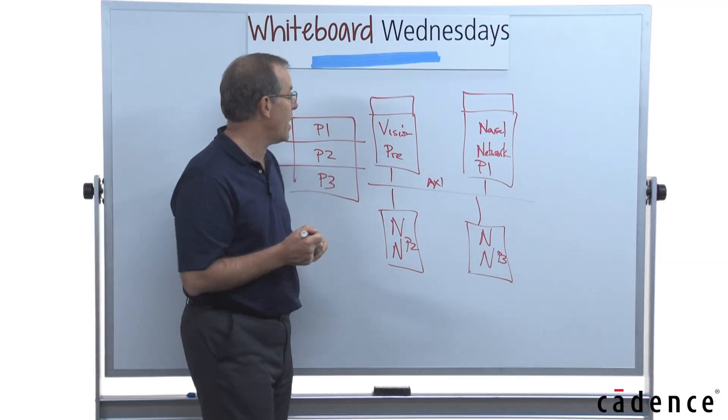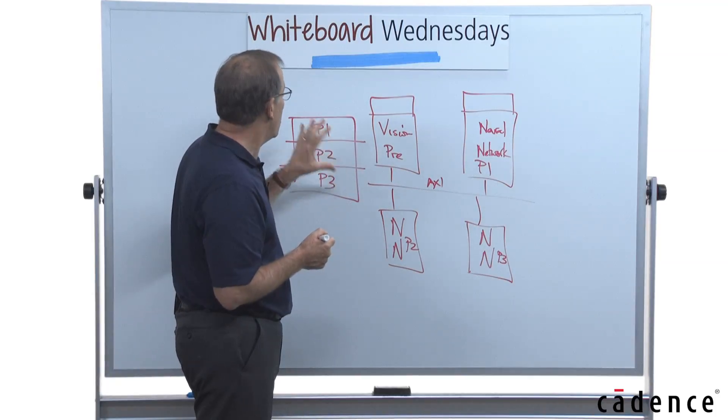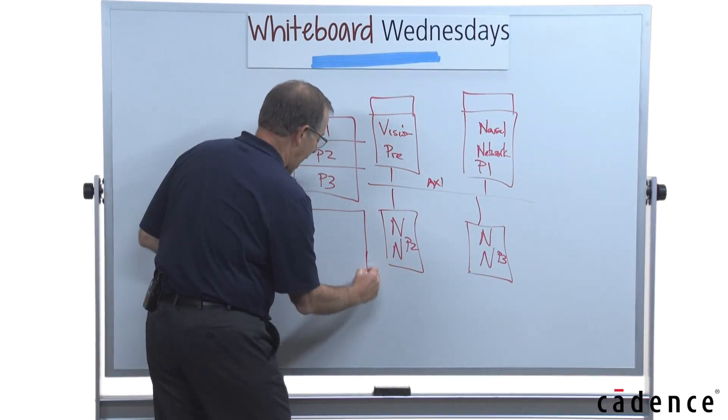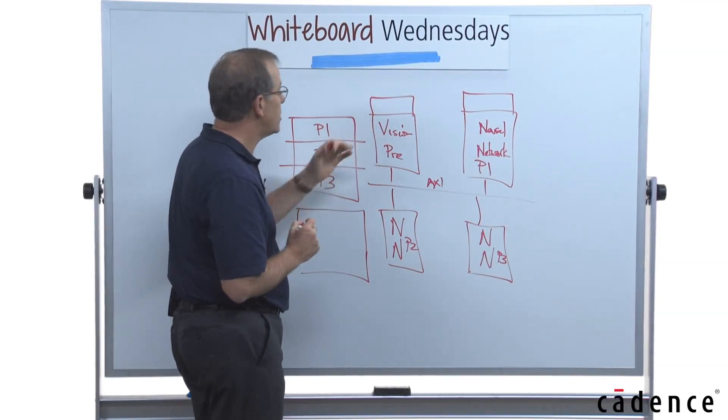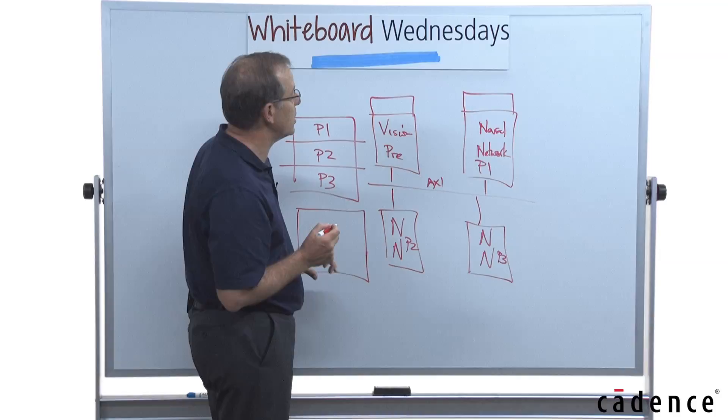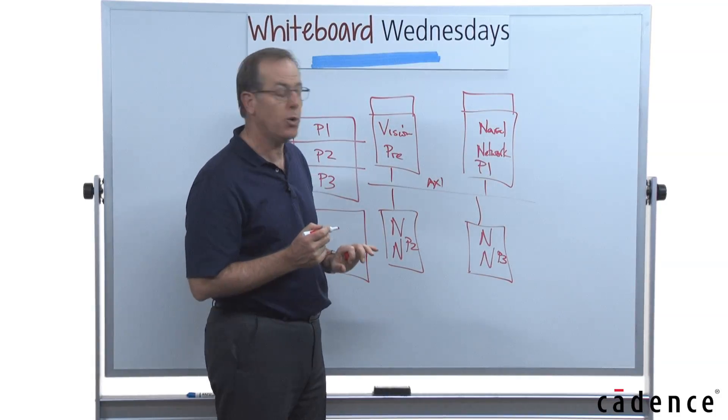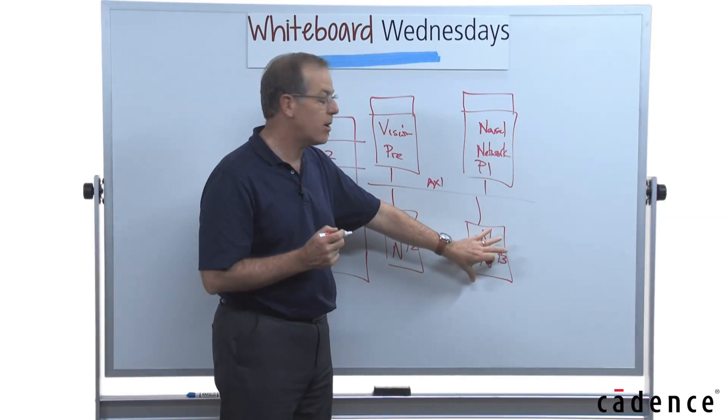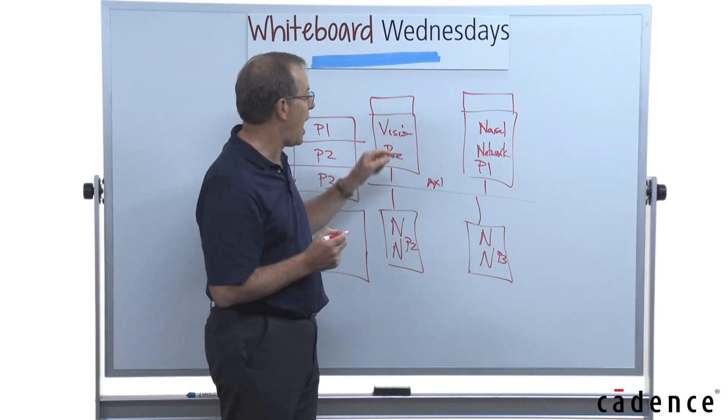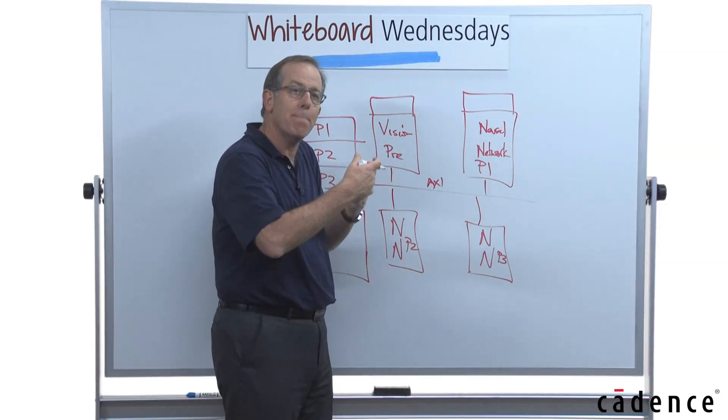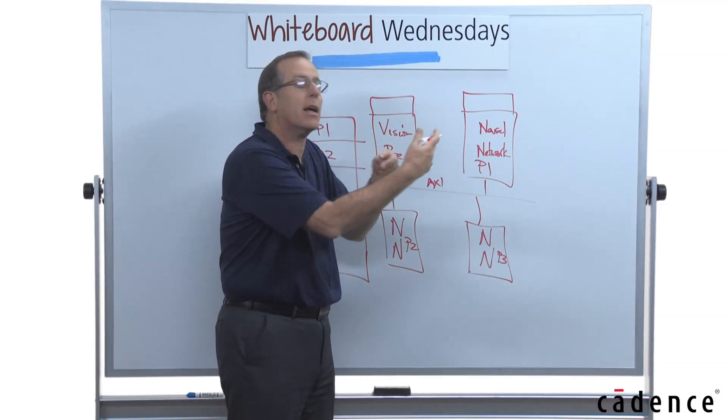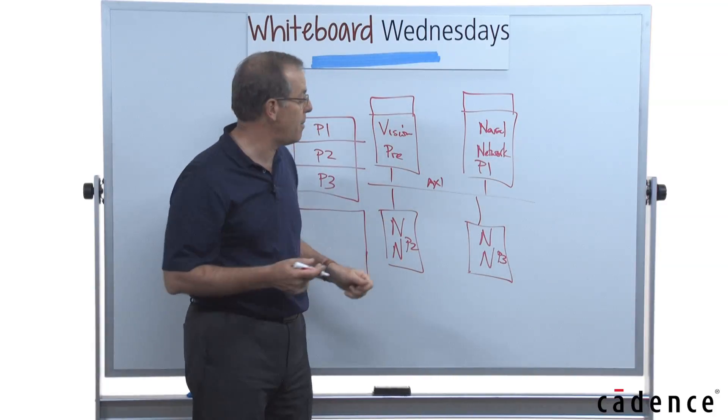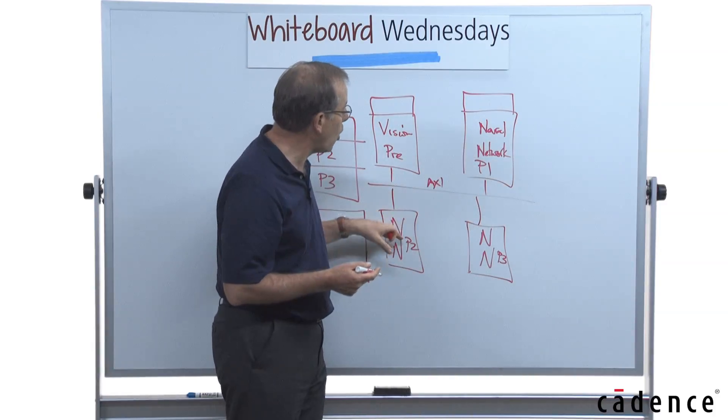The second thing you might do is you might say, I'm going to run certain layers of my task on each of the processors. So I'll do preprocessing here. I might do layers one and two here, layers three and four here, and layers five, six, seven, and eight there. And the data, that is the maps, the intermediate computation, then flow over this bus, typically driven by the DMA channels, from one core to the next.